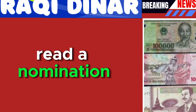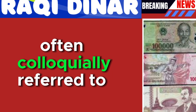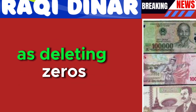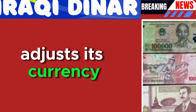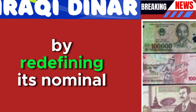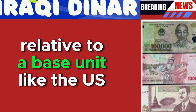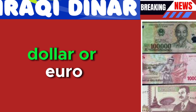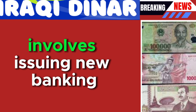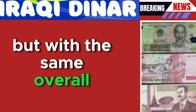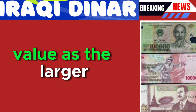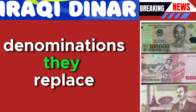Currency redenomination, often colloquially referred to as deleting zeros, is a process where a country adjusts its currency by redefining its nominal value relative to a base unit like the US dollar or euro. This process typically involves issuing new banknotes and coins in smaller denominations but with the same overall value as the larger denominations they replace.